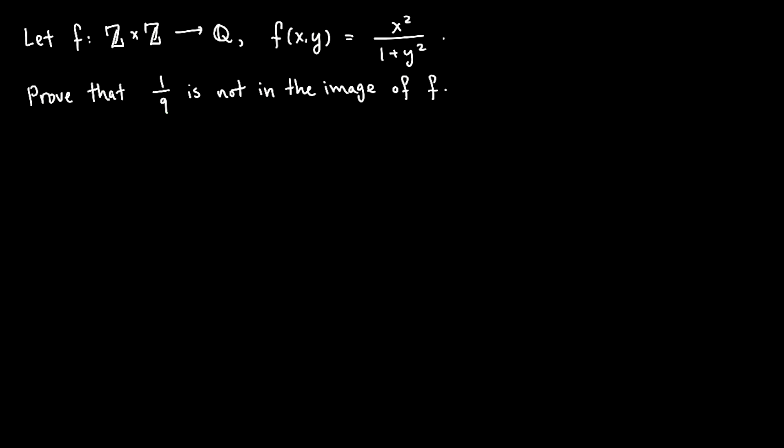Okay, so let me break this down a little bit. Z cross Z is the set of pairs of integers, right? That means something like x comma y, where x and y are two integers.